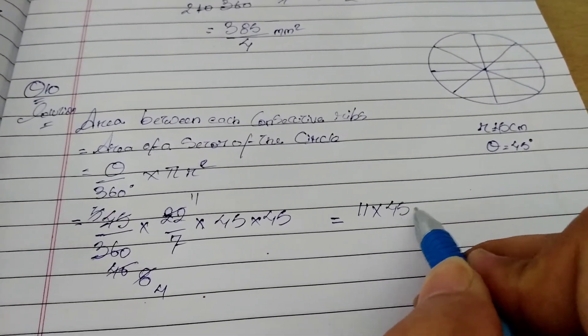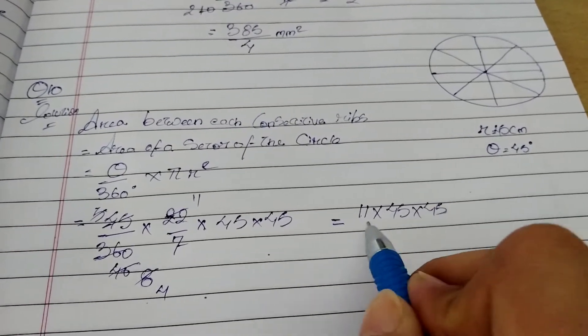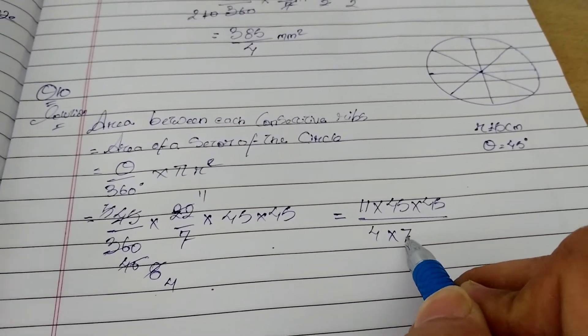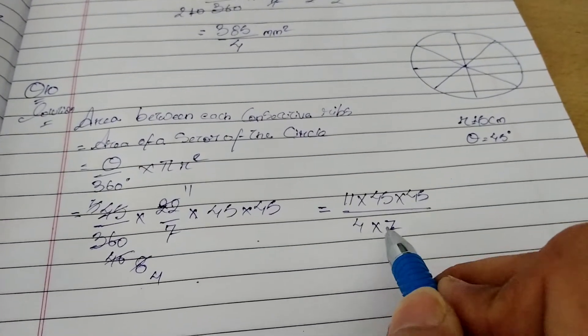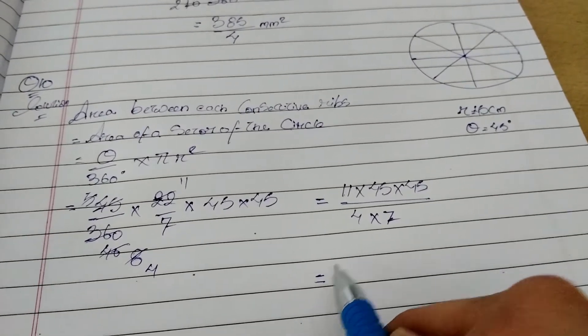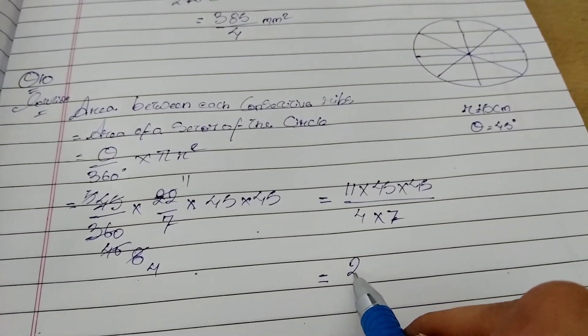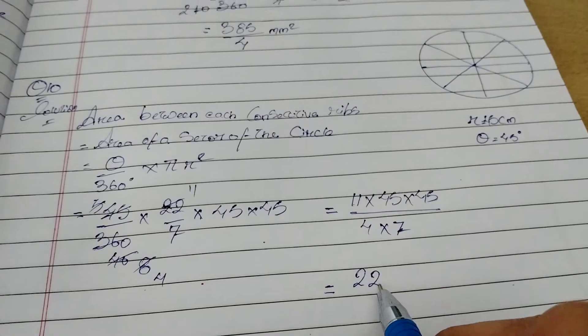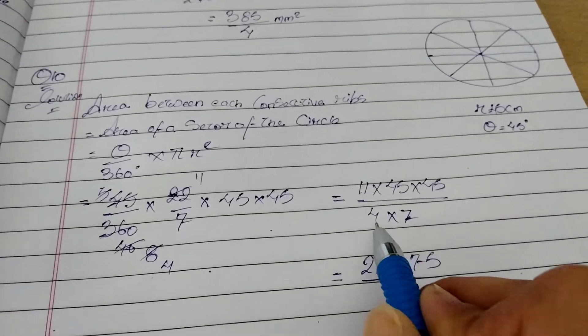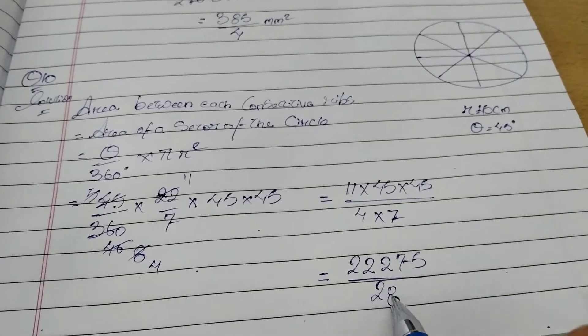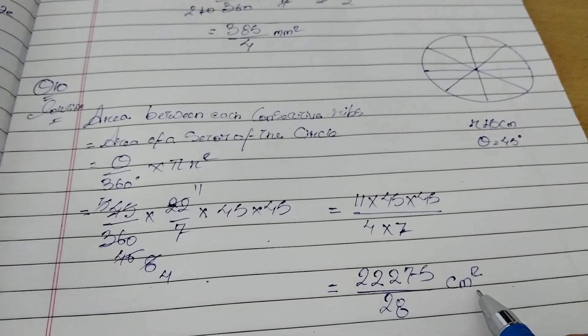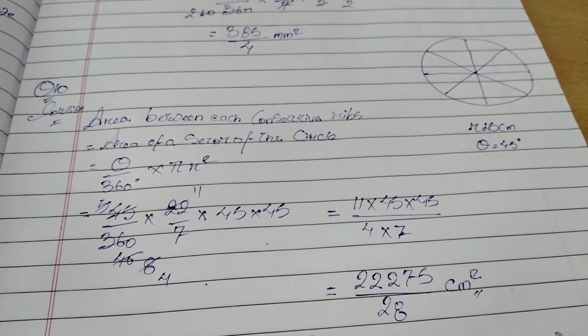Okay, so the remaining numbers that we have after removing are 11, 45, 45, and 7 and 4. 11 into 45 into 45 by 4 into 7. Let's multiply, the upper and the lower. What we get: 22,275 by 28 centimeter square. So this is what we get.